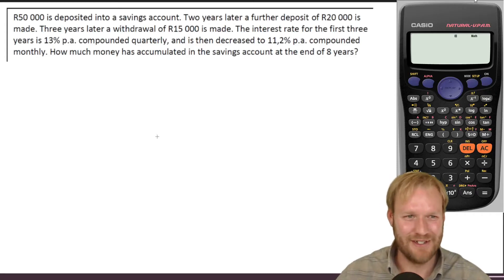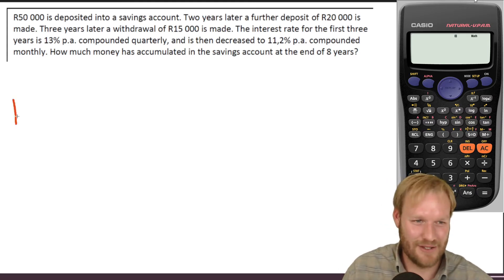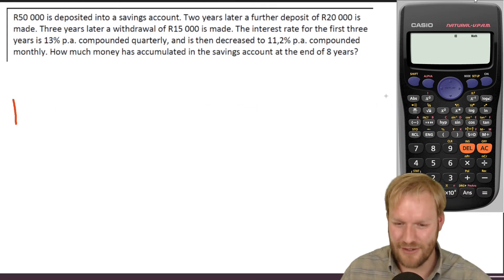Okay, we're back with some more stories. 50,000 is deposited into a savings account. Two years later a further deposit. Three years later. So of course, immediately we're thinking, well, there's going to be a glorious timeline going along.